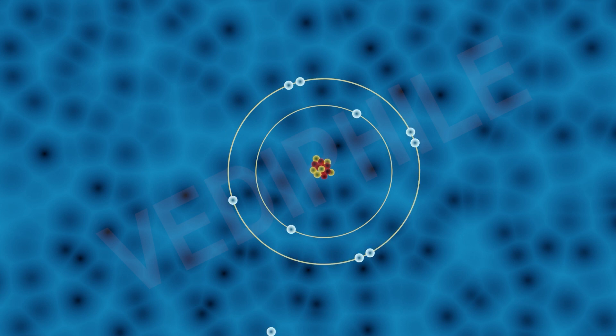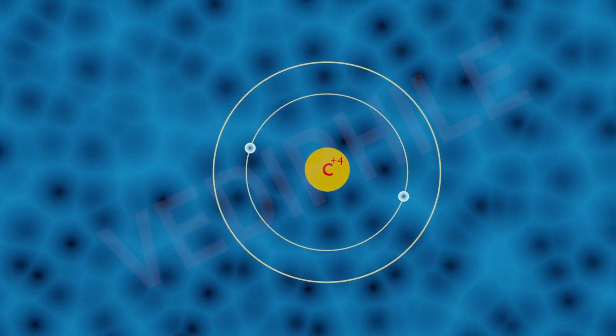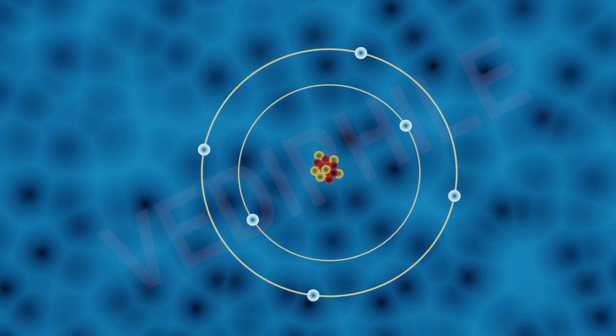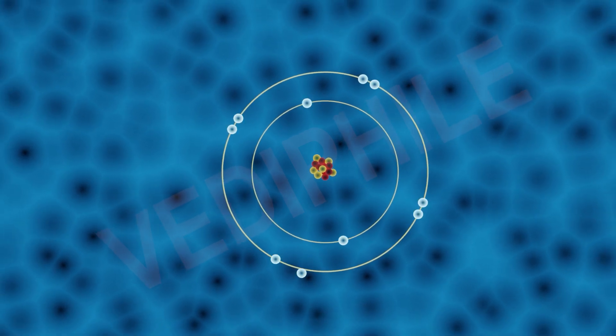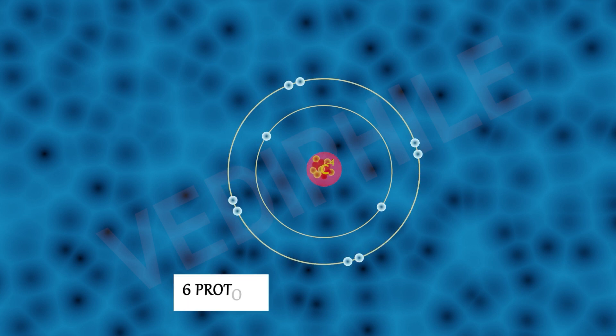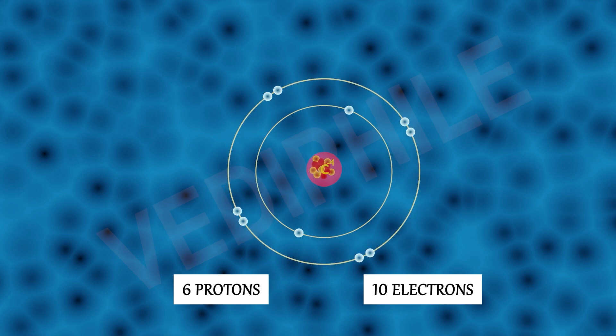If carbon gains 4 electrons, it forms C4- anion. Carbon could gain 4 electrons forming C4- anion. It has 6 protons and 10 electrons, but it would be difficult for the nucleus with 6 protons to hold on to 10 electrons, that is 4 extra electrons, so it becomes unstable.